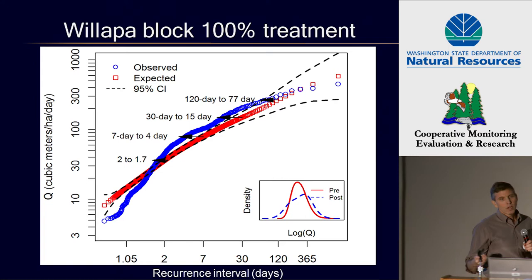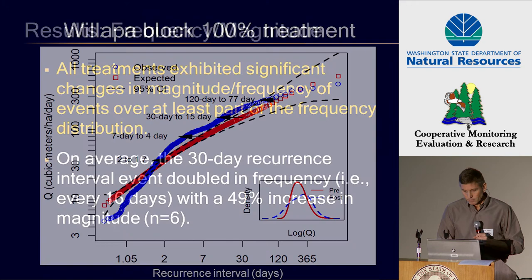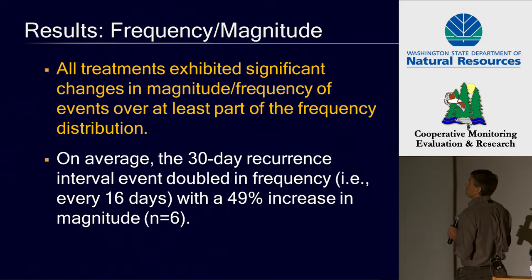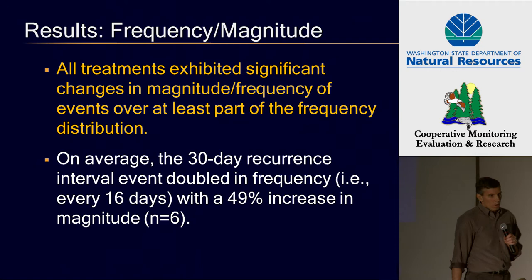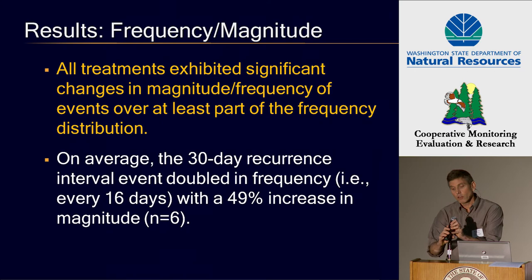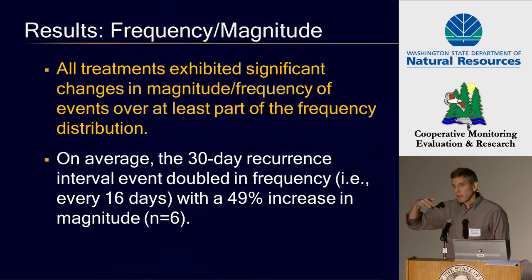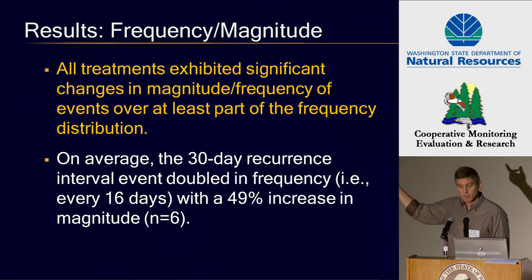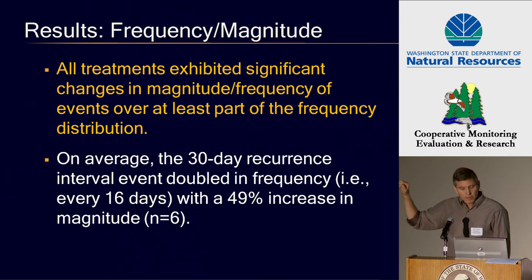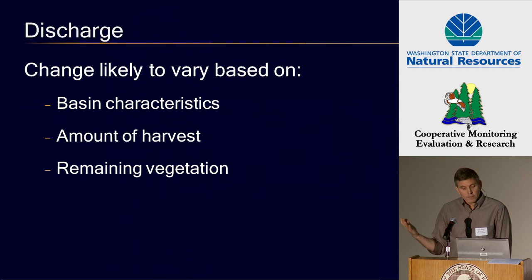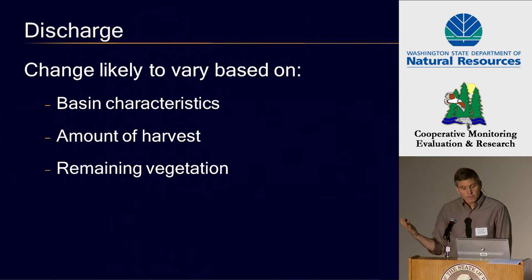A lot of times we tend to not see or look for these kinds of changes. This is a 15-minute talk, so I can't go through all the treatment data, but we did see significant changes in frequency-magnitude across all treatments. In general, the clear cuts had big changes in relative magnitude for low events, in contrast to the 100% treatment which actually saw a decrease in discharge for frequent events, and we didn't see changes in peak flows for anything. The 30-day event doubled in frequency across pretty much all the treatments. Discharge varies based on basin characteristics, amount of harvest, and where the remaining vegetation is, and our results are consistent with that.